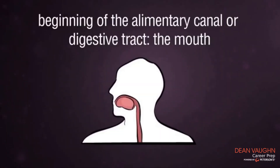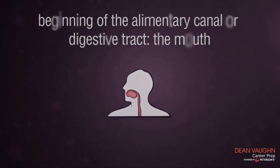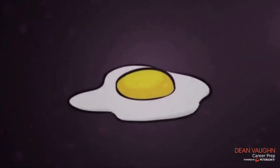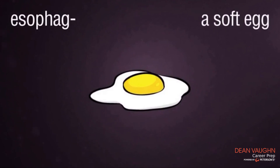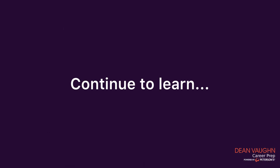This image shows the beginning of the alimentary canal or digestive tract: the mouth. Elementary school. Next, esophagus sounds like a soft egg. Esophagus — a soft egg. Say this twice: esophagus, a soft egg. See a soft egg.